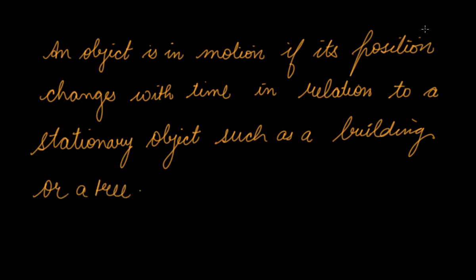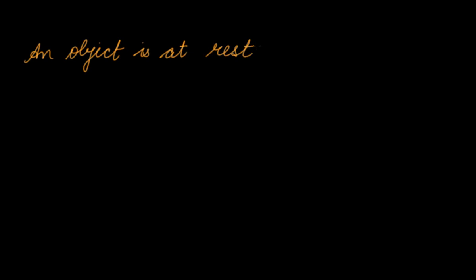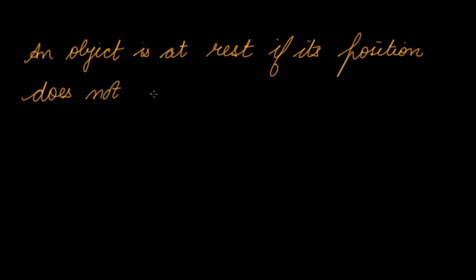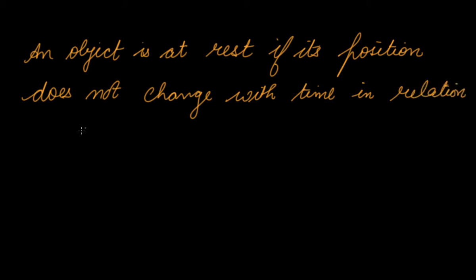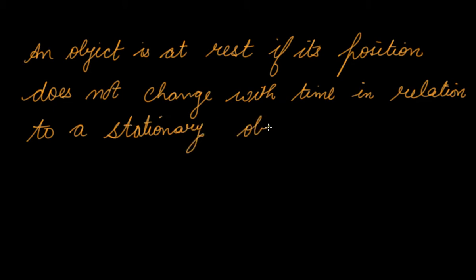This is what we mean by motion — the movement. An object is at rest if its position does not change with time in relation to a stationary or still object. So when objects do not change their position, they are said to be at rest.